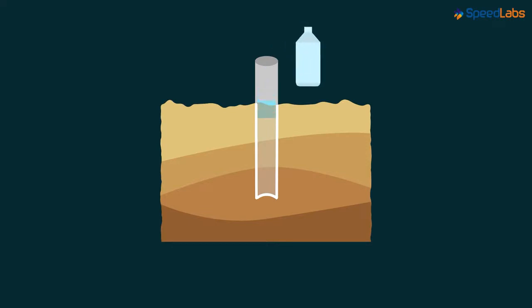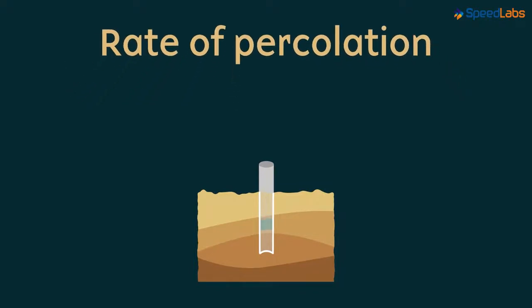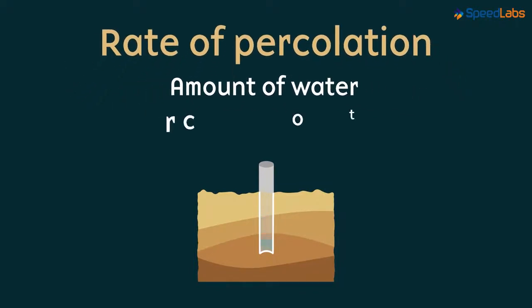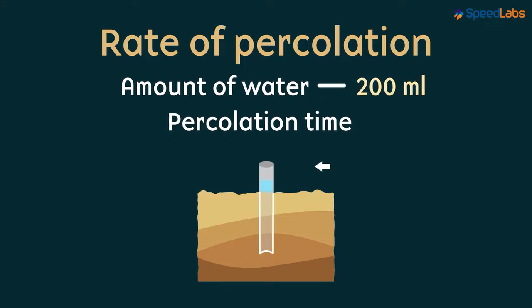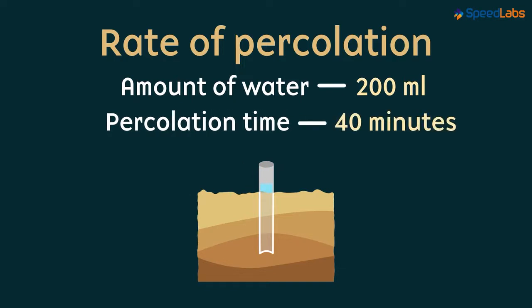Now all we need to do is calculate the rate of percolation based on how much water was added and how much time did the water take to percolate completely. So let us say we added 200 milliliters of water and it took almost 40 minutes for all that water to percolate.